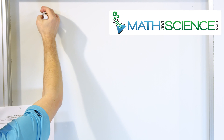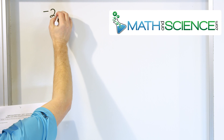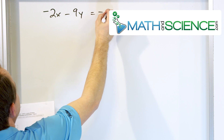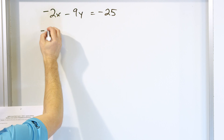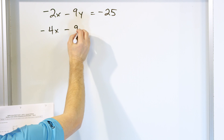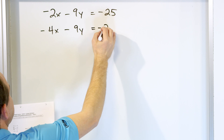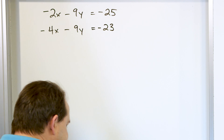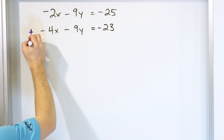The first equation in our system is negative 2 times x minus 9 times y is equal to negative 25. The second equation is negative 4 times x minus 9 times y equals negative 23. So let's say that we want to solve this system of equations, and you decide to add these together.